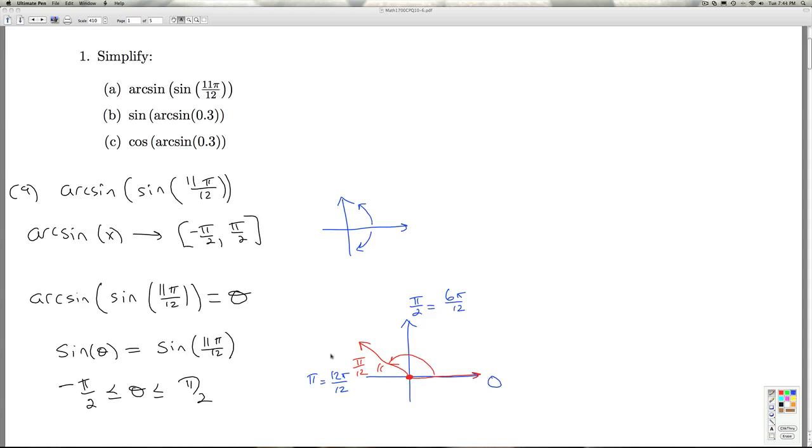So, where is this angle theta that I'm looking for? Well, the sine of theta has to be the sine of 11π over 12. And theta has to be between negative π over 2 and π over 2.